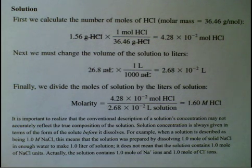So for example, when a solution is described as being 1.0 molar NaCl, this means that the solution was prepared by dissolving 1.0 moles of solid sodium chloride into enough water to make one liter of solution. It does not mean that the solution contains one mole's worth of NaCl units. Actually, the solution contains one mole of Na plus ions and one mole of Cl minus ions because the one mole of NaCl units dissolved, meaning they split apart due to the polarity of the water.